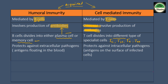The fourth difference: humoral immunity protects against extracellular pathogens — antigens or pathogens floating in the blood. Cell-mediated immunity protects against intracellular pathogens. So humoral immunity targets extracellular pathogens and cell-mediated immunity targets intracellular pathogens.